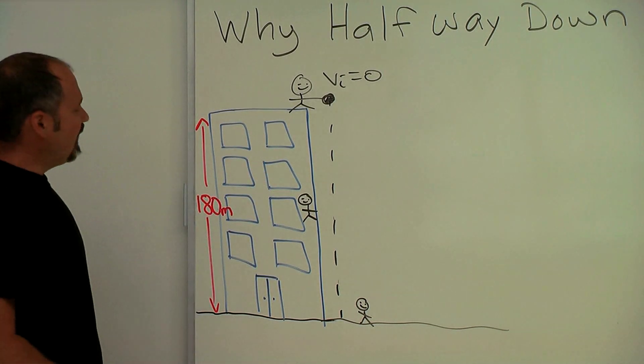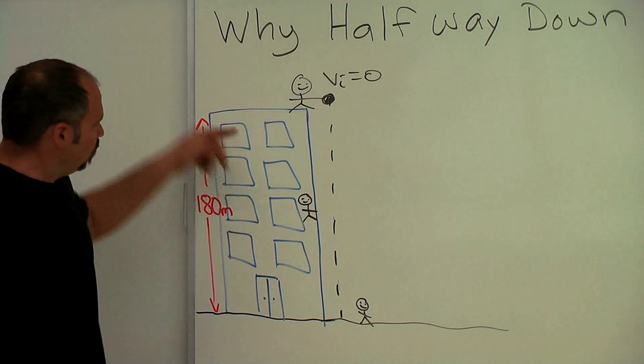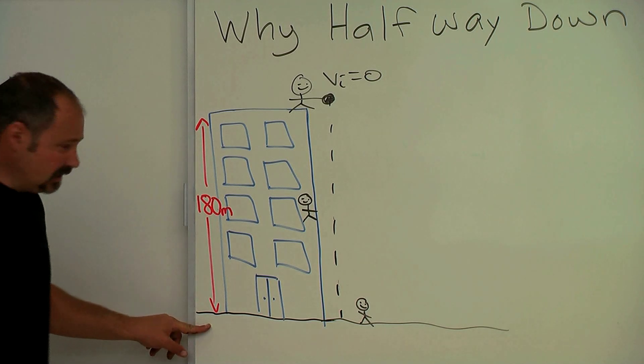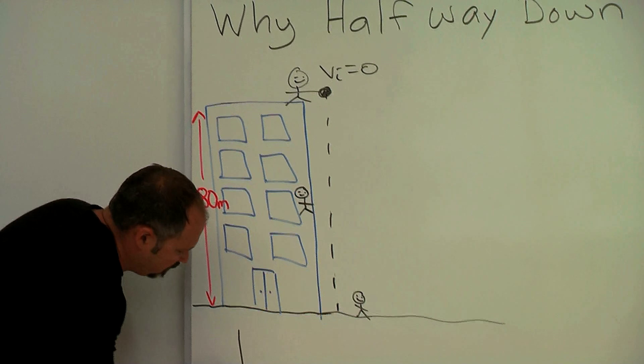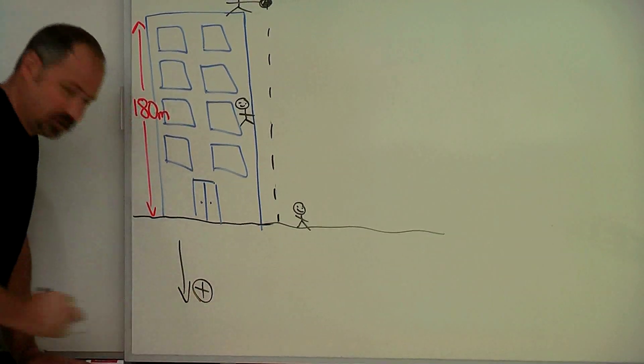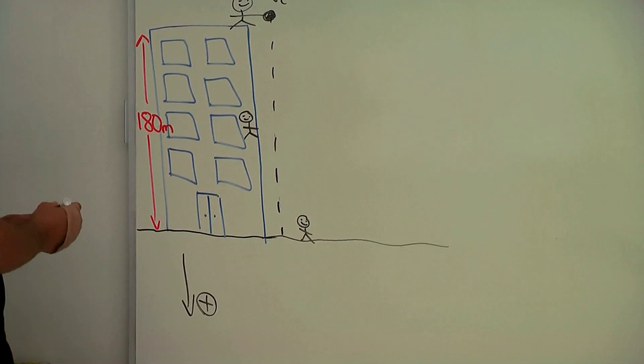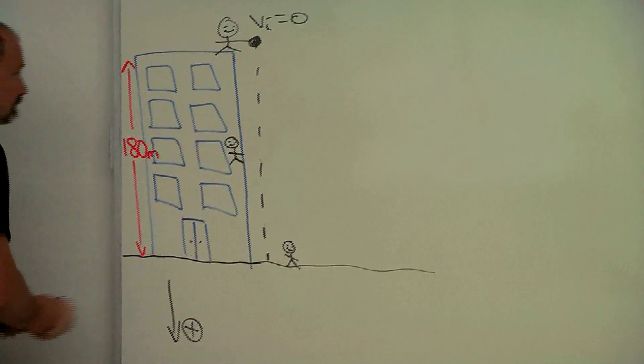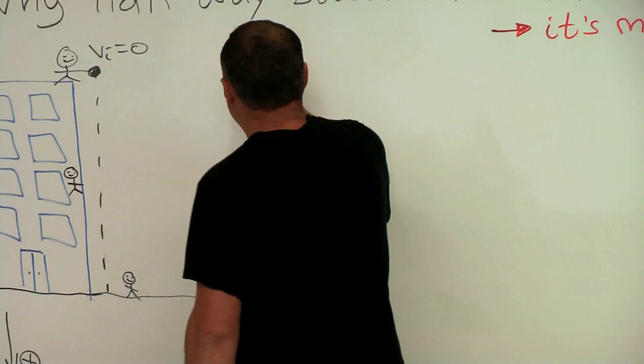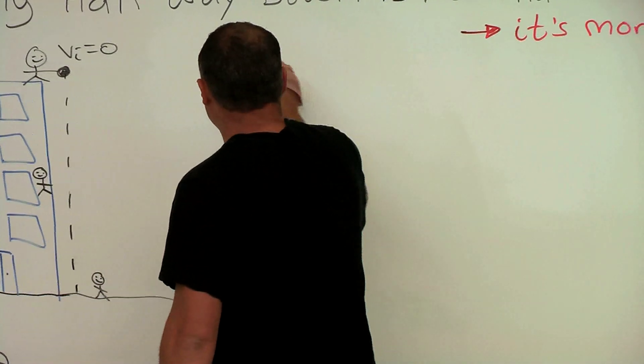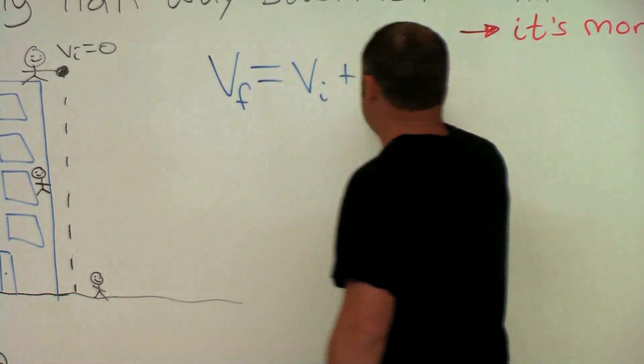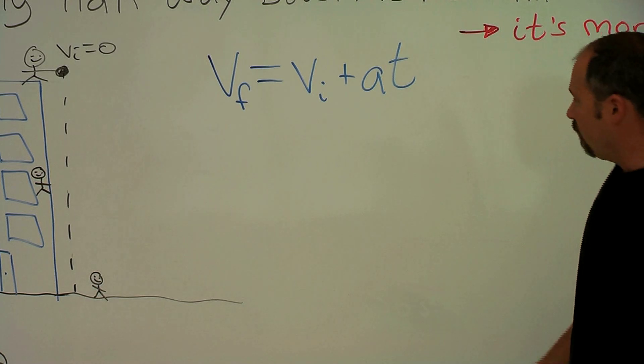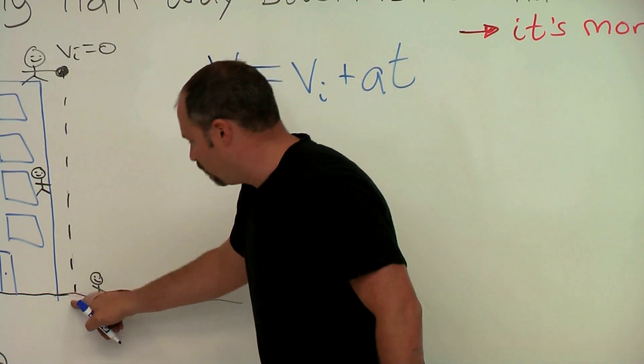Now the building is 180 meters. Let's calculate what the speed is at the bottom. I'm going to make downward the positive direction for this problem. We know that the final speed V will equal the initial speed plus at, acceleration times time.